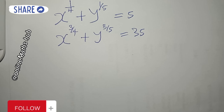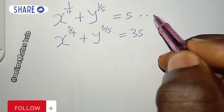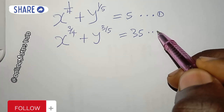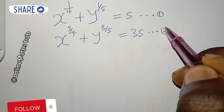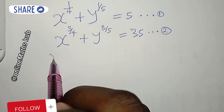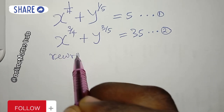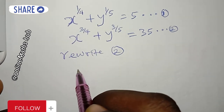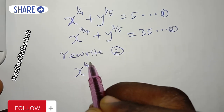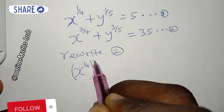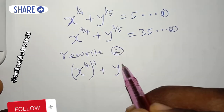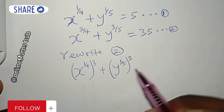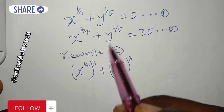Let me number them for the sake of referencing. I'll call this equation 1 and this equation 2. What I'm going to do is rewrite equation 2 and factorize the 3 out, so I have 3 times (x^(1/4) + y^(1/5)), and if I multiply through I'll still have what I had before — it's equal to 35.